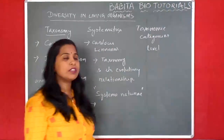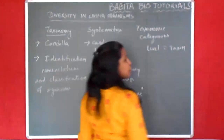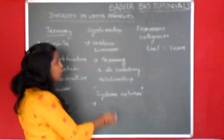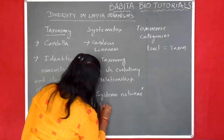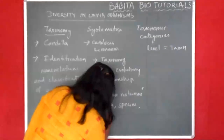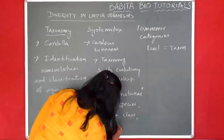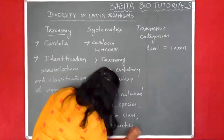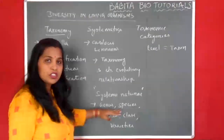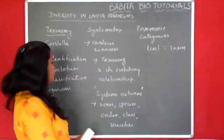That level is known as a taxon, and in scientific terms we call it a taxon. What are the taxon levels given by Carolus Linnaeus? He gave: genus, species, order, class, and varieties.